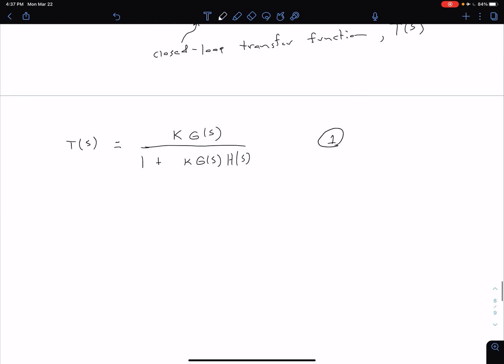So let's recall our definition of a pole. Definition of a pole of T of S is going to be a value of S that makes the denominator of our T of S equal to zero. So our T of S becomes infinite.